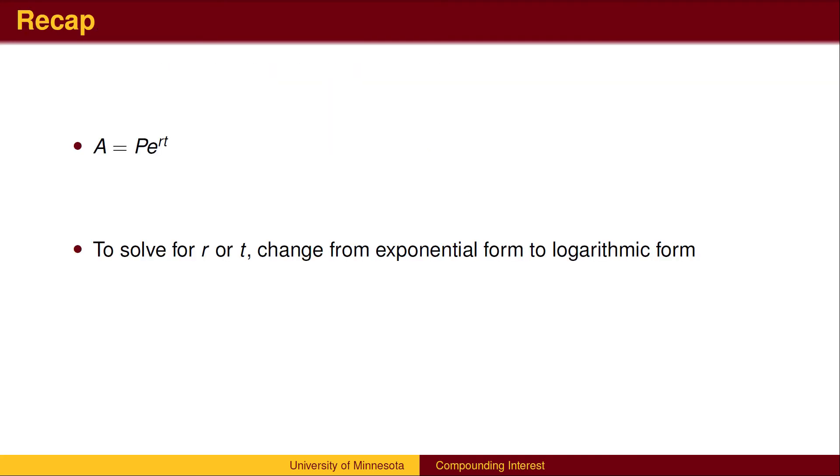To recap, using the formula A equals Pe to the RT, to find either A or P, evaluate the exponential function and solve. To find R or T, we will need to take the natural log of both sides.